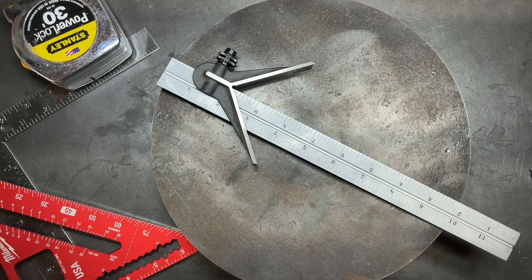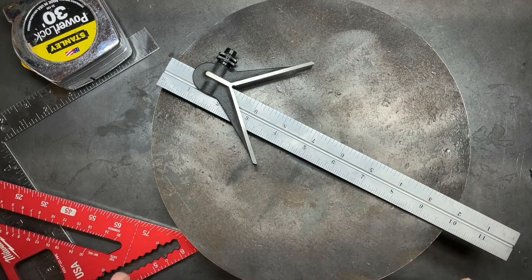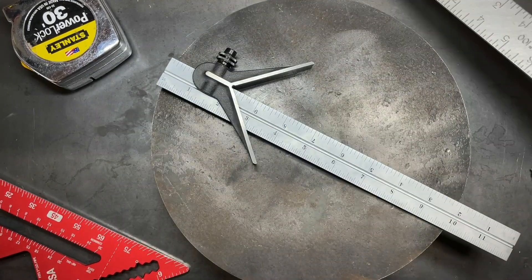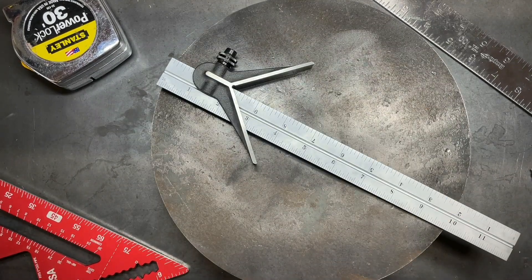In an earlier video, I showed you how to find the center of a circle using just a little framing square. It's known as Thales Theorem and if you're interested in that video, I'll post a link for it here.